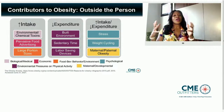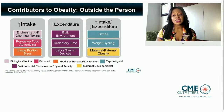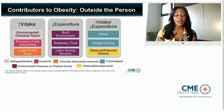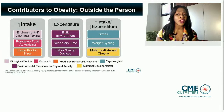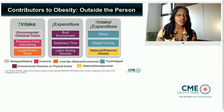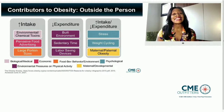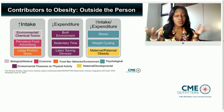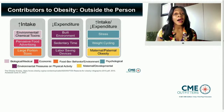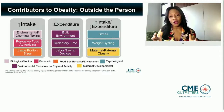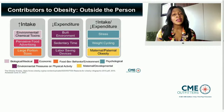Contributors to obesity outside of an individual include environmental chemical toxins, pervasive food advertising, or large portion sizes — things that increase intake. Things that decrease expenditure include the built environment, sedentary time, and labor-saving devices like washing machines and dishwashers. Things that both increase intake and decrease expenditure include stress — which leads to increased inflammation, storage of adipose tissue, and weight cycling — and maternal and paternal obesity.